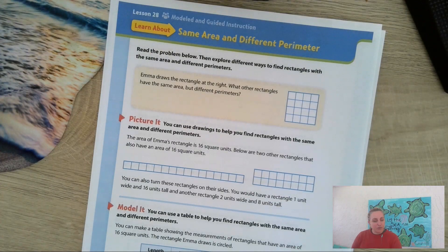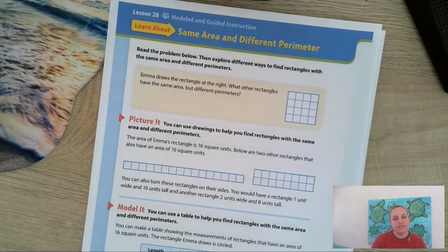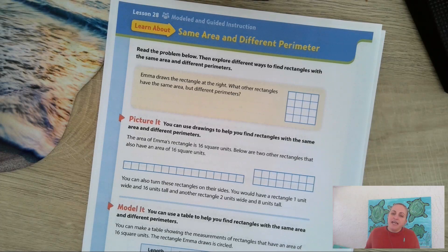Hey fourth graders, so we're still working with area and perimeter, but today we're going to be looking at how we can have shapes, rectangles, that have the same area and a different perimeter.